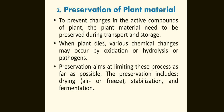Preservation of the plant material. To prevent changes in the active compounds of plants, the plant materials need to be preserved during transport and storage. When the plant dries, various chemical changes may occur by oxidation, hydrolysis, or pathogens. Preservation aims at limiting those processes as far as possible. The preservation includes drying — air or freeze — stabilization, and fermentation.